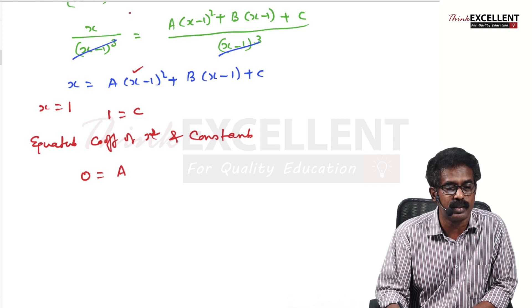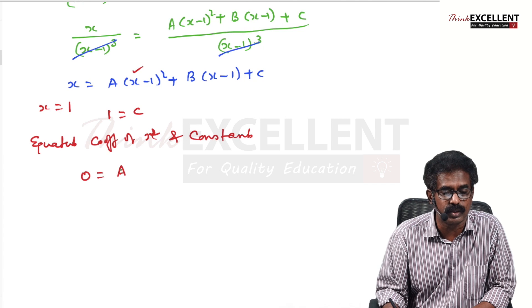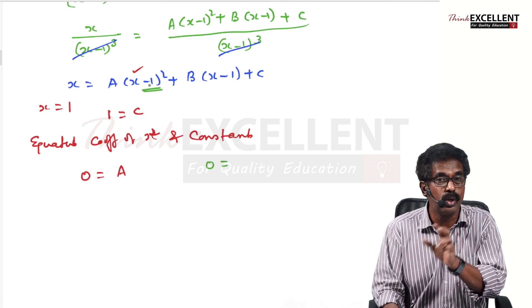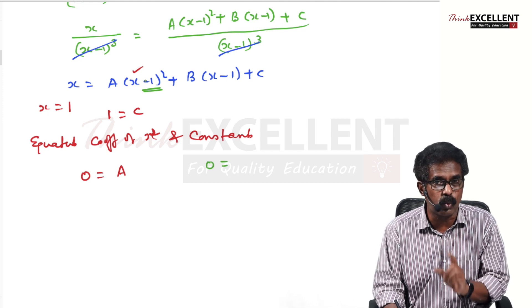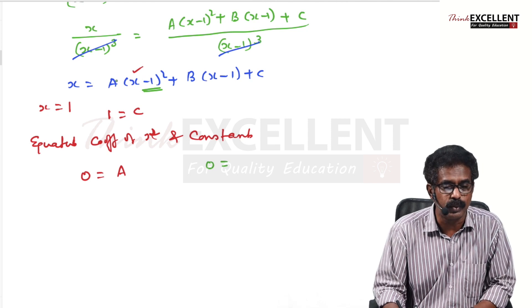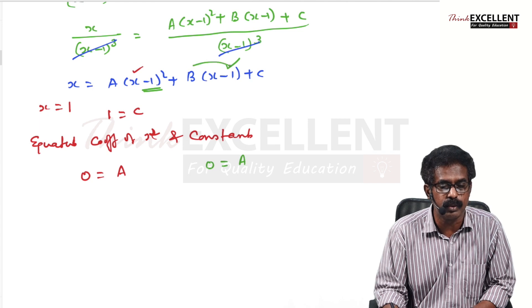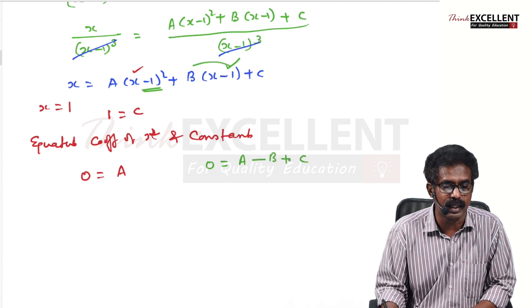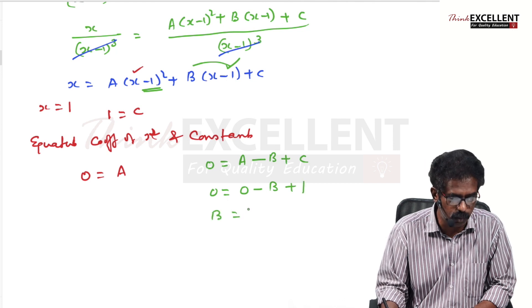Now equate the constant terms on both sides. The left side has no constant, so it is 0. From A(x−1)², the constant is A·1 = 0. From B(x − 1), the constant is B·(−1) = −b. Plus C = 1. So 0 = 0 − B + 1, giving B = 1.